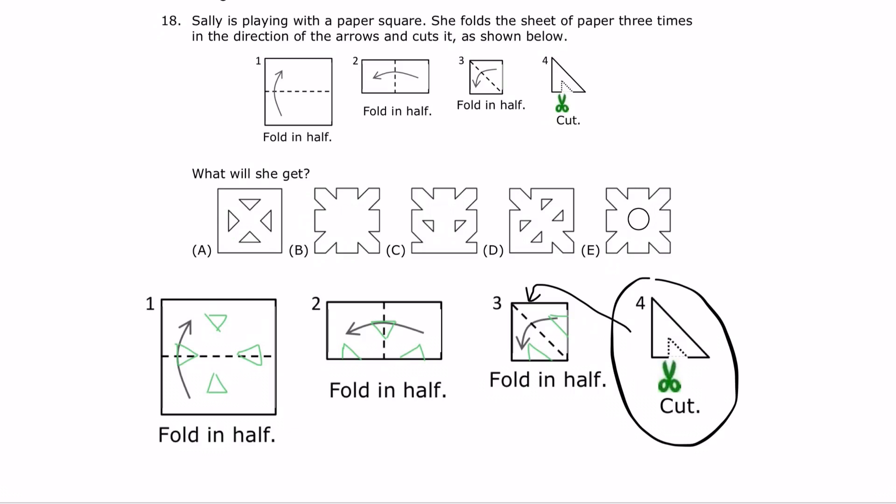If she unfolds this again, she will get this, where there's a triangle in the middle cutout and a half triangle on the bottom of each side, as shown.